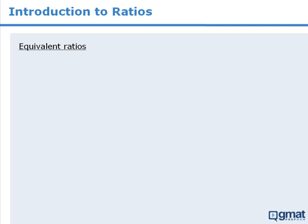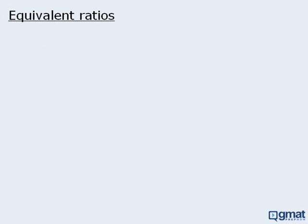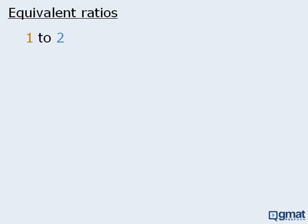Let's look at equivalent ratio questions first. We should recognize that the ratio one to two is equivalent to the ratio three to six. Saying there is one girl for every two boys is the same as saying there are three girls for every six boys. Both ratios express the same proportions, so one to two and three to six are equivalent ratios.